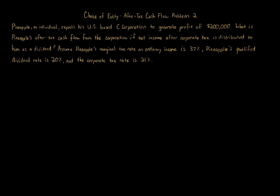Choice of entity after-tax cash flow, problem 2: Pineapple. An individual expects his US-based C corporation to generate profit of $200,000. What is Pineapple's after-tax cash flow from the corporation if net income after corporate tax is distributed to him as a dividend? Assume Pineapple's marginal tax rate on ordinary income is 37%, the qualified dividend rate is 20%, and the corporate tax rate is 21%.